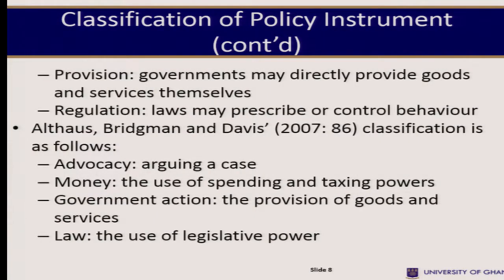Now let's look at the classification of Althos, Bridgman and Davis. They classify policy instruments as follows: Advocacy — arguing a case; Money — the use of spending and taxing power; Government action — the provision of goods and services; and Law — the use of legislative power.